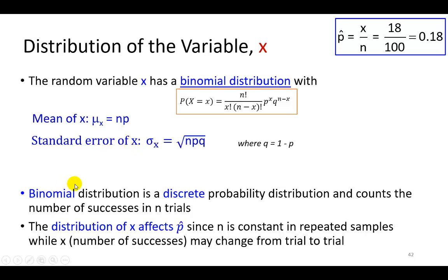By its nature, variable x is a discrete variable and the binomial distribution is a discrete probability distribution. Since p hat is equal to x divided by n, as in this example, you take a sample of 100 and you find that 18 are defective, p hat comes out to be 0.18. The distribution of x, which is the number of successes, is going to affect the behavior, or the distribution of p hat. Since n, the sample size is constant in repeated samples, but x, the number of successes, can change from trial to trial.